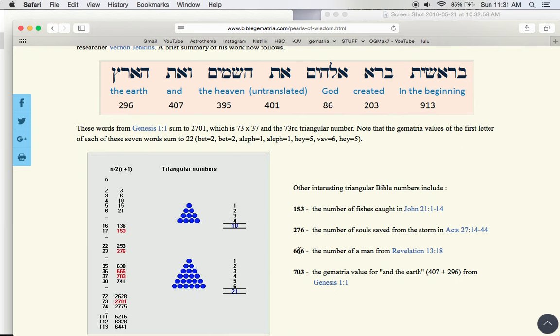And there's specific numbers: 666, 703 which is right here and the earth, and then we got 276 from the book of Acts, and then of course 153.